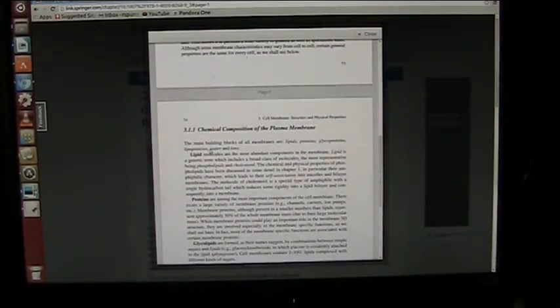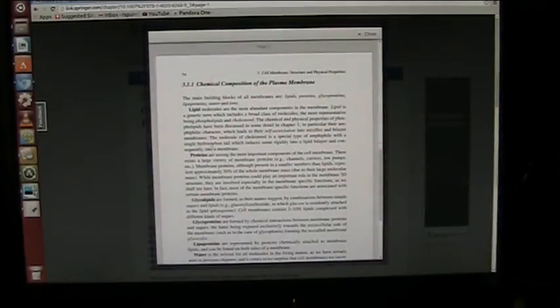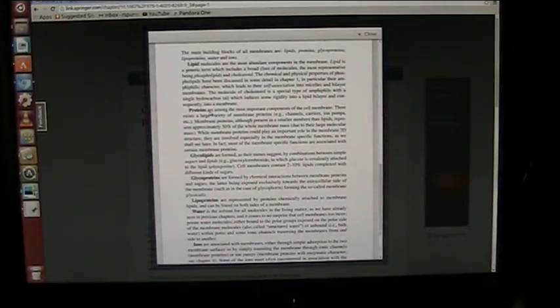Here's the chemical composition. Main building blocks of all membranes are lipids, proteins, glycoproteins, lipoproteins, water, and ions. It's like virtually carbon and hydrogen. Lipids are the most abundant. And they have a hydrocarbon tail. That's what they are, a single hydrocarbon tail.